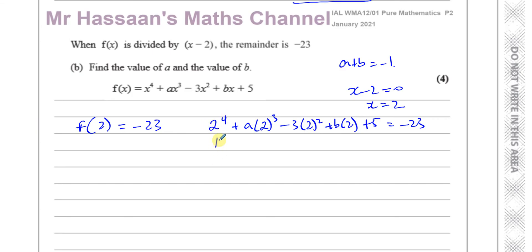2^4 is 16, 2^3 is 8, so that's 8a. 2^2 is 4, so 4 × -3 is -12, and plus 2b plus 5 equals -23. So I'm left with 16 - 12, which is 4. 4 + 5, which is 9.